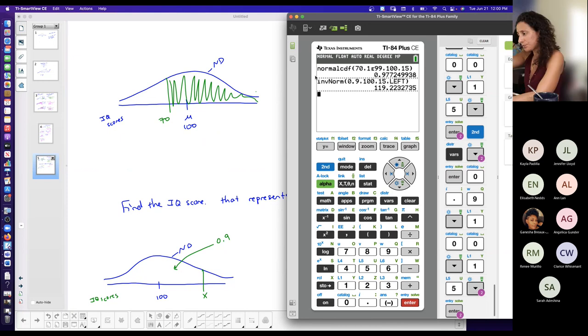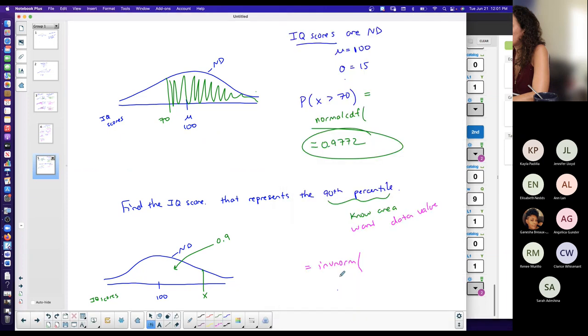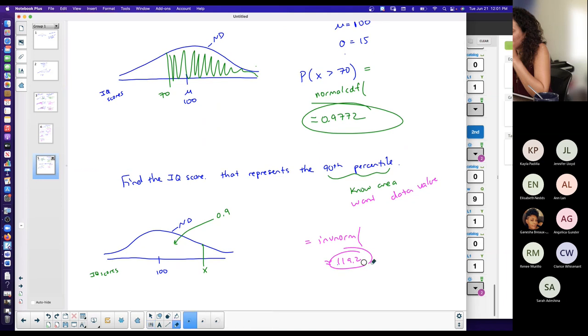119. Now because this represents an IQ score, it all depends on how you want to round, but typically we would round into full numbers. I might just round it to the tenth, but 119.2 approximately. So an IQ score of 119 is in the 90th percentile.